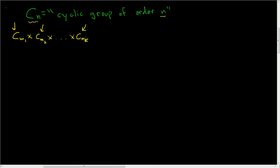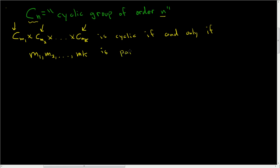The statement in algebra says that this direct product is cyclic if and only if the orders of the cyclic groups are pairwise relatively prime. What does it mean for a list of integers to be pairwise relatively prime? It means if you take any two and compute the greatest common divisor, you should get 1.